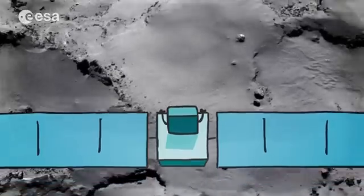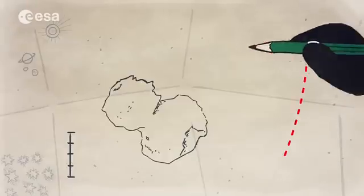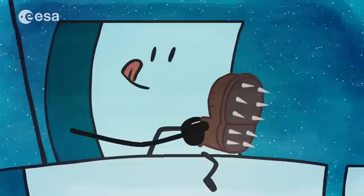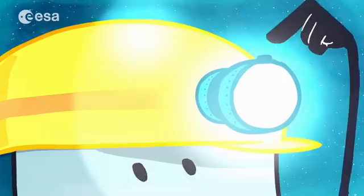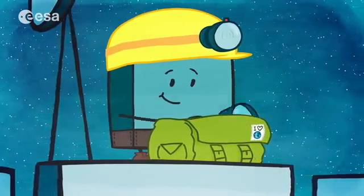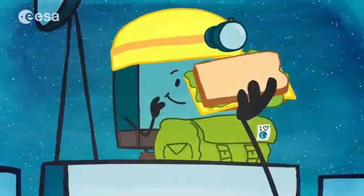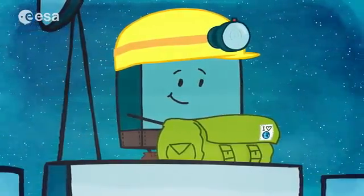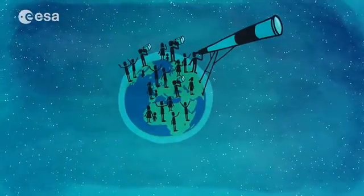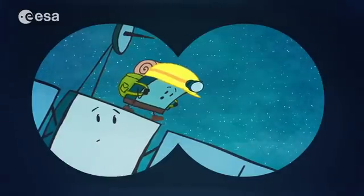Then Rosetta had to plan the exact route around the comet to make sure that Philae would land in the right place. Soon it was time for Philae to make the final preparations for his great adventure. He checked that he had everything he needed to land on the comet. Both spacecraft couldn't wait any longer. The whole world would be watching as Rosetta and Philae got ready for their biggest challenge yet.